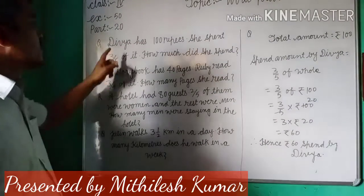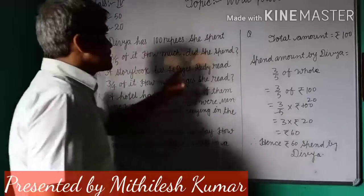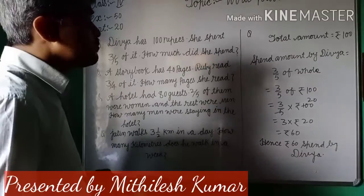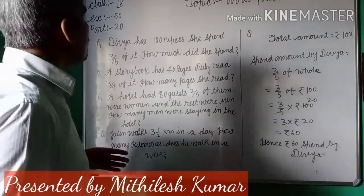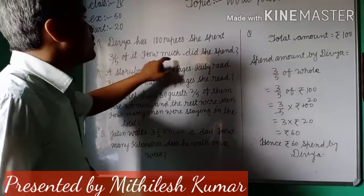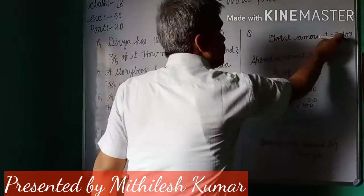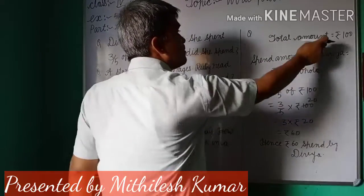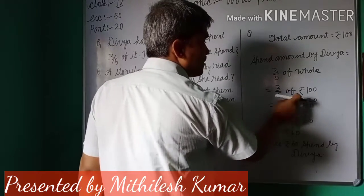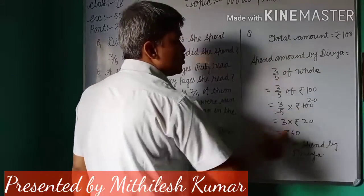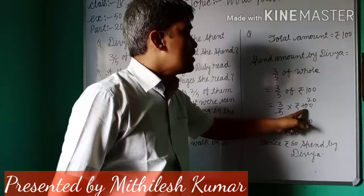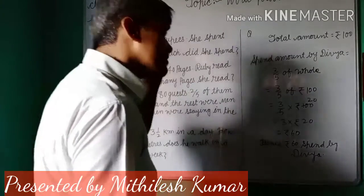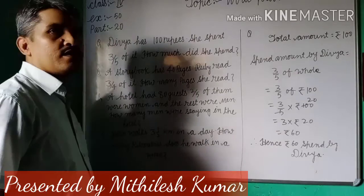Let me repeat: Divya has 100 rupees total amount. She spent 3 by 5 of it. So 3 by 5 of the whole, which means 100 rupees. Now 3 by 5 multiplied by 100 — 5 goes into 100 giving 20, and 3 multiplied by 20 equals 60 rupees. Hence 60 rupees are spent by Divya. I hope that you understand.